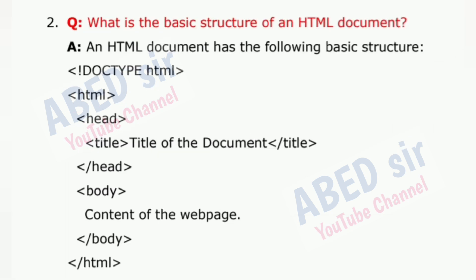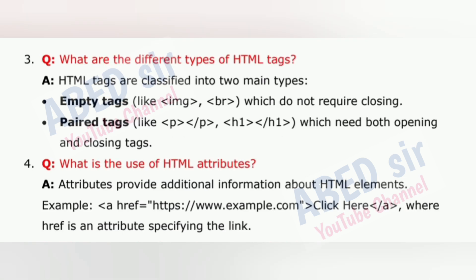Question 2: What is the basic structure of an HTML document? An HTML document has the following basic structure: DOCTYPE HTML, HTML, Head, Title — title of the document — Title, Head, Body — content of the webpage — Body, HTML.